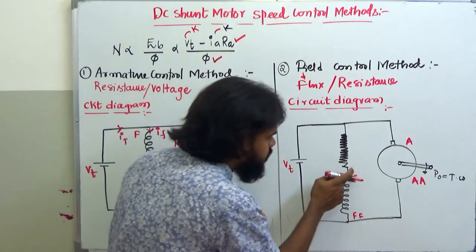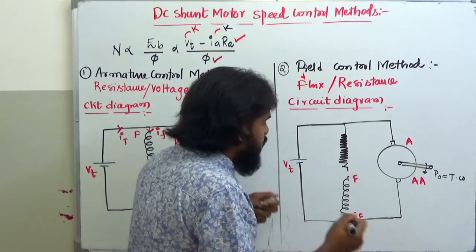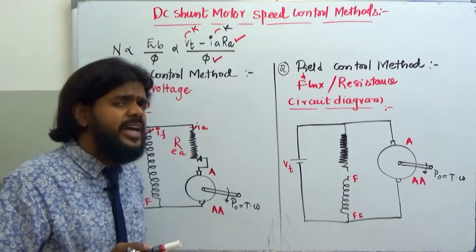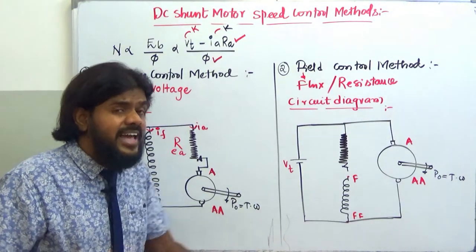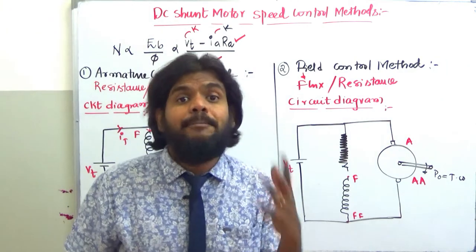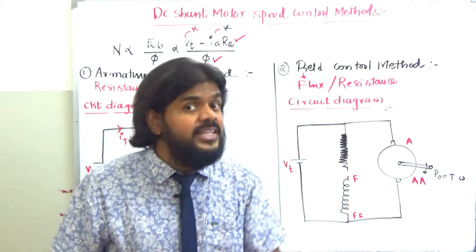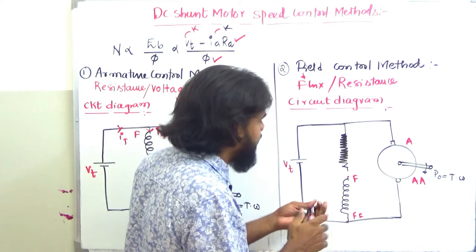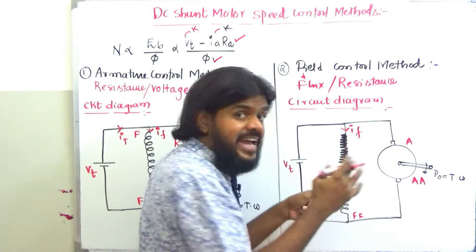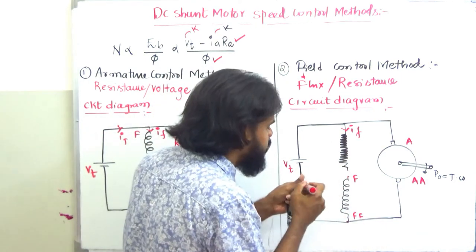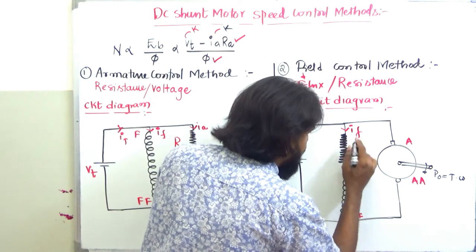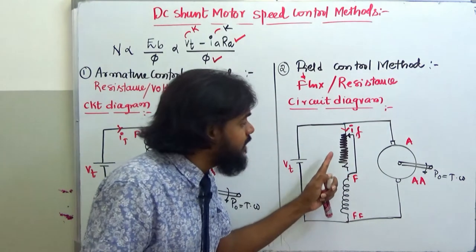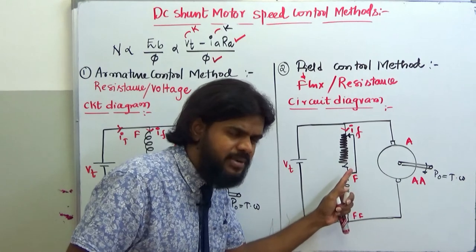The second method is based entirely on variation of flux. You can change the flux by changing the field current — the current flowing through the field winding. To change this current, we connect an external resistance in series with the field winding, so that we can vary the field current and thereby change the flux.